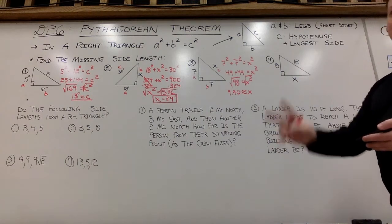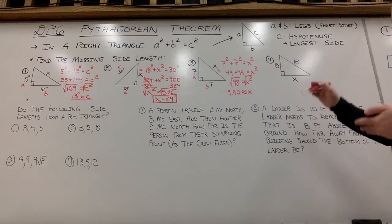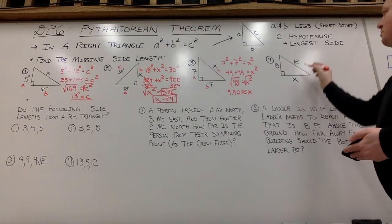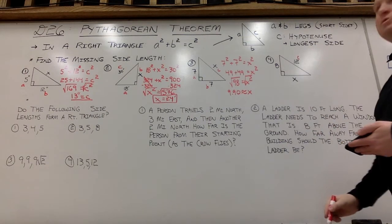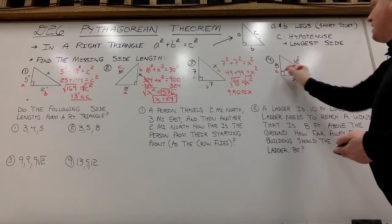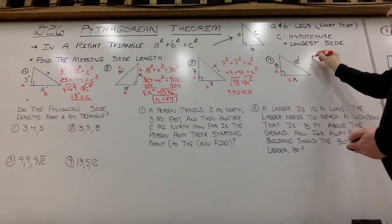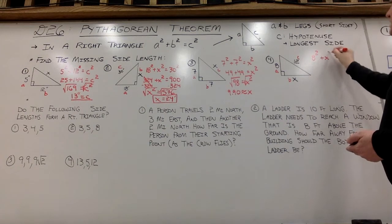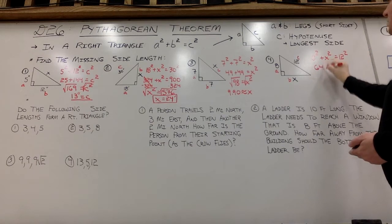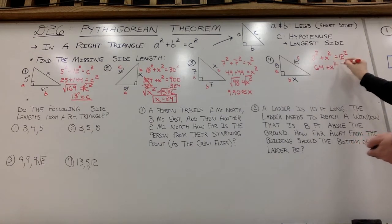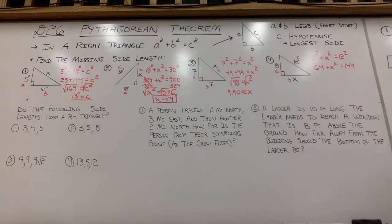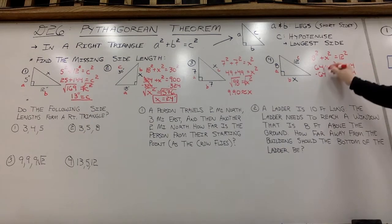Again, we're rounding to the nearest hundredth, two decimal places. All right, we'll have a similar look here on question four. However, I'm giving you C, the hypotenuse in this case, and then A and B are your legs. I'll give you one of the two. So we'll say A, 8 squared plus x squared will equal 12 squared. 8 squared is 64. Plus x squared will equal 144.